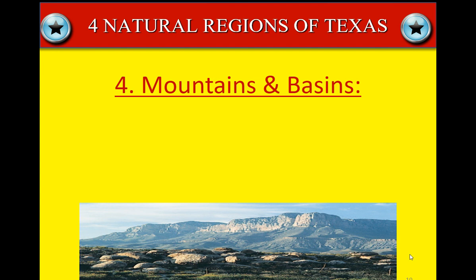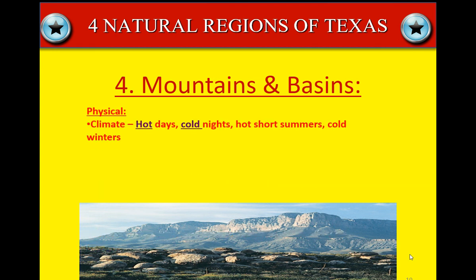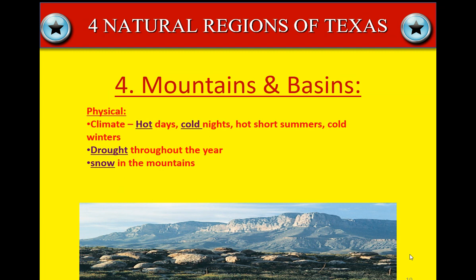The fourth region — mountains and basins. The physical characteristics: hot days, cold nights, hot short summers, and cold winters. Essentially, you're getting close to being in the desert. There is drought throughout the year and it does not rain much in that region at all. You can get snow in the mountains — it can be snowy up in the mountains and still brutally hot down in the valley. There are also a couple of rivers that flow through there, and there are deserts.